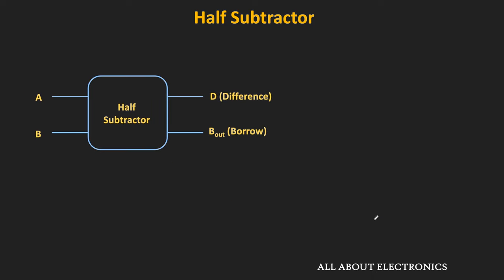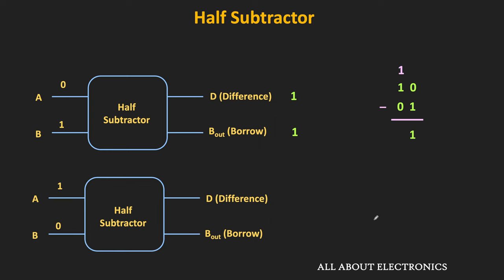Now this half subtractor circuit is good for doing the subtraction of the LSBs, because during the subtraction of the LSBs there is no incoming borrow. For example, let's say we want to do the subtraction of these two numbers. While subtracting the LSBs, we can use this half subtractor. So in that case A is 0 and B is 1, giving difference equal to 1 and borrow equal to 1. But in the next stage the inputs are 1 and 0 while the borrow input is also equal to 1 — so we cannot do this subtraction using the half subtractor because there is no provision for the borrow input. So whenever we want to do subtraction along with the borrow input, we can use the full subtractor.